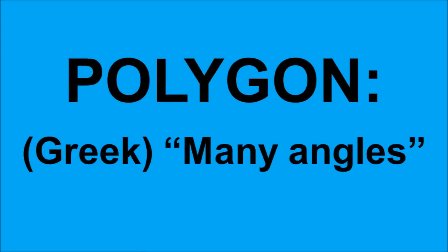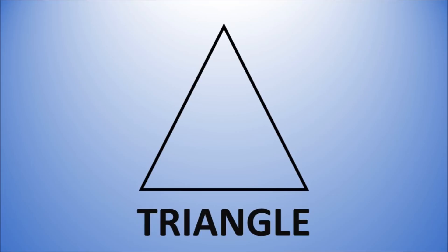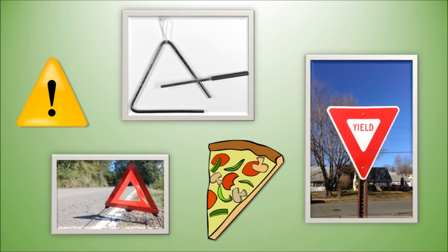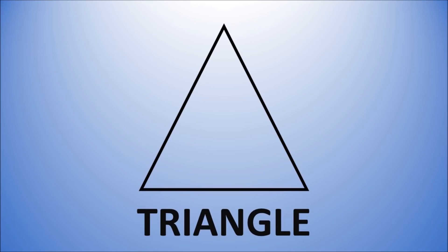The word Polygon comes from the Greek word meaning many angles. A triangle has three sides and three angles made from straight lines. You see triangles all the time.